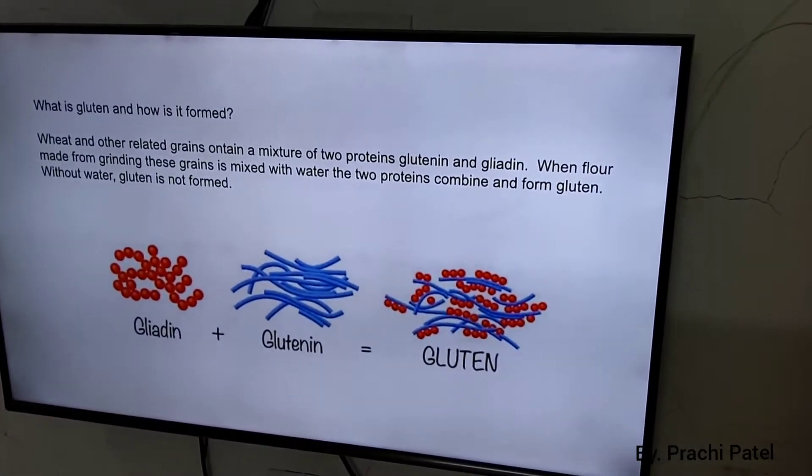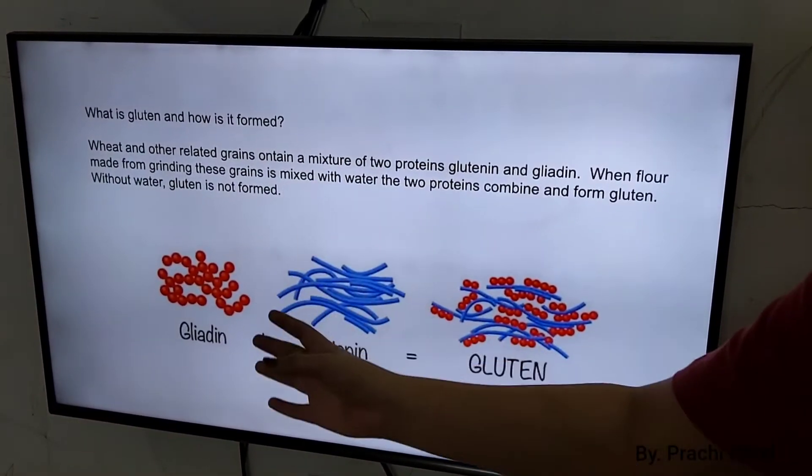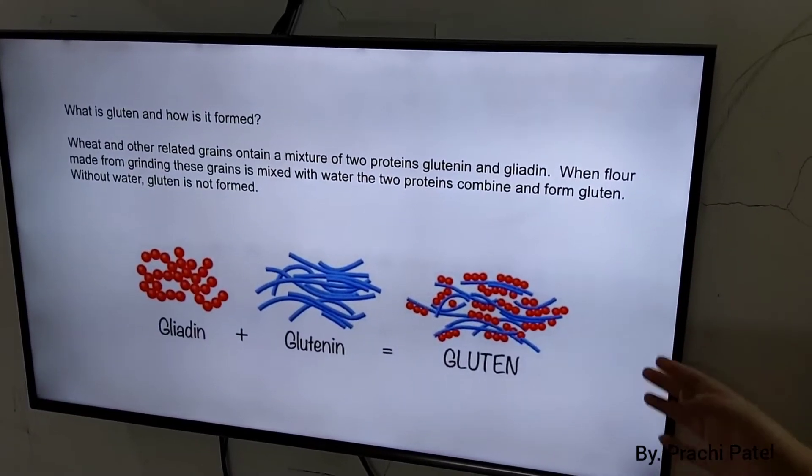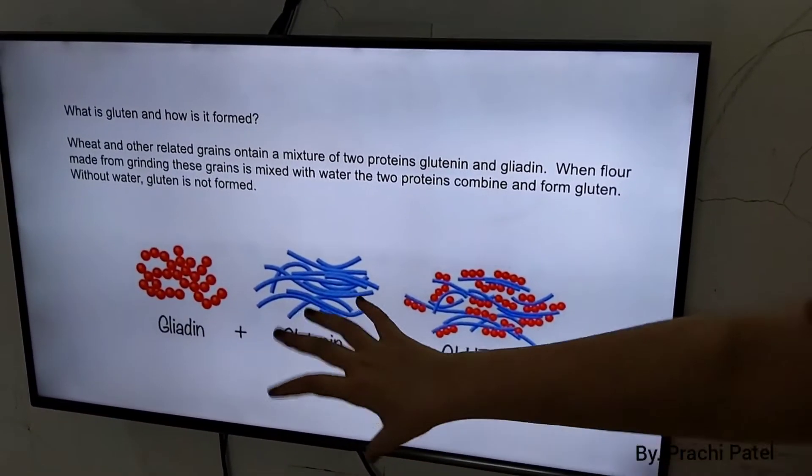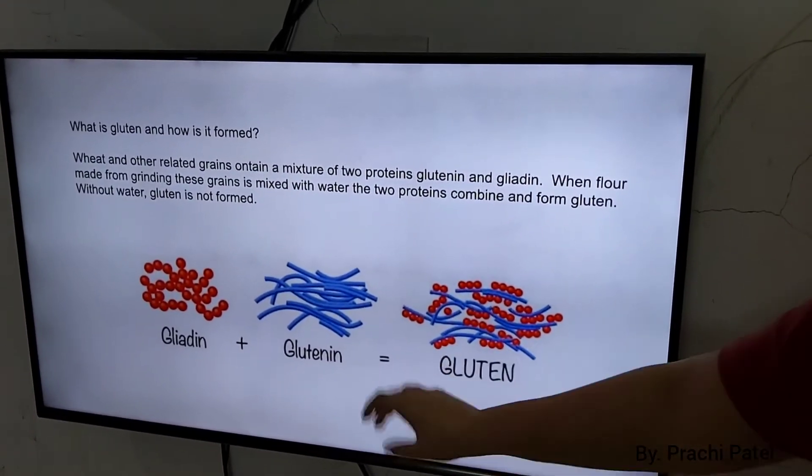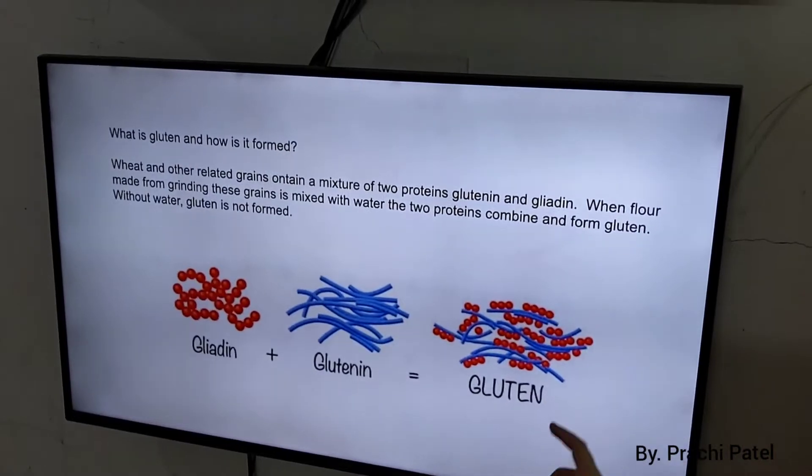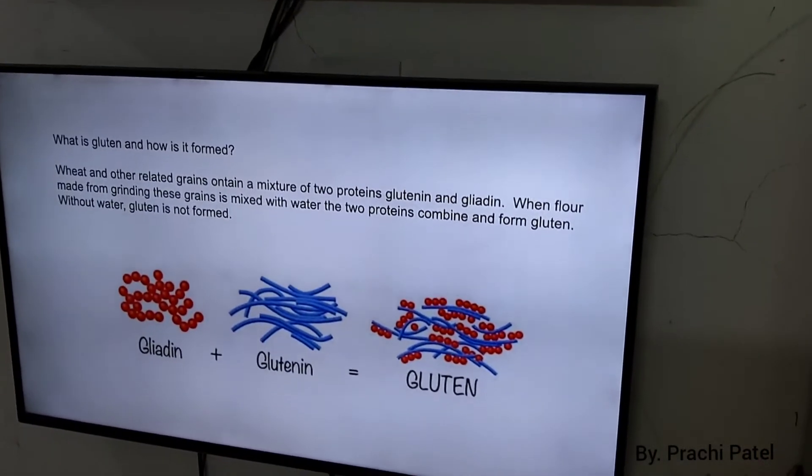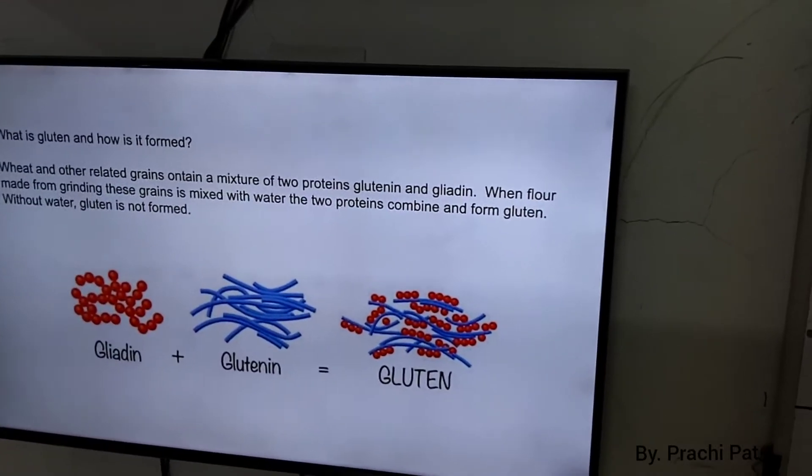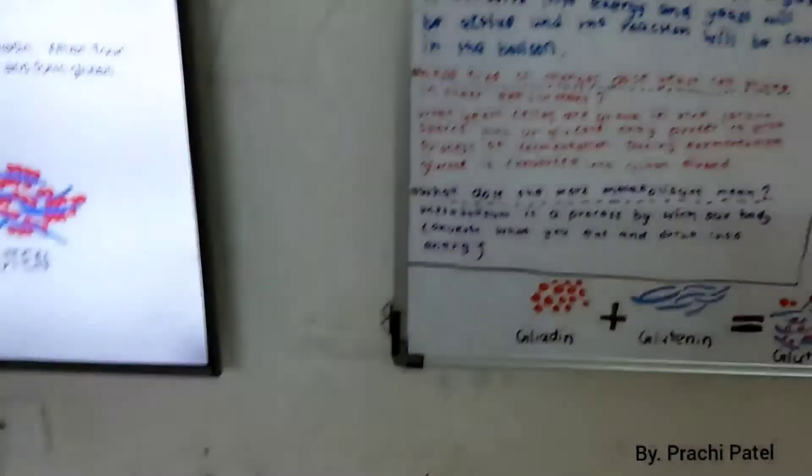Now, I have shown you a picture over here. First it is gliadin, then it is glutenin, and then it is gluten. There are some differences in the words but you have to remember that. Gliadin, glutenin and gluten. In the flour, when you add the water, this happens.